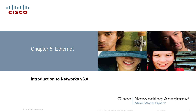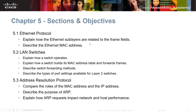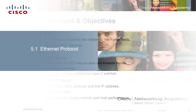Let's take a look at Chapter 5, Ethernet. We're going to have three parts: we're going to talk about Ethernet protocol, the sub-layers and the Ethernet MAC address, LAN switches and how switches operate, and then address resolution protocol, or ARP.